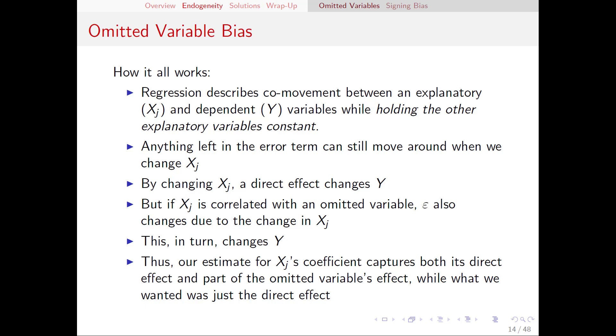Omitted variables are going to cause our estimates to be off. This is what we call bias in statistics. Bias means that, on average, our estimates will be wrong. This, of course, is a big problem when we're trying to establish causality.